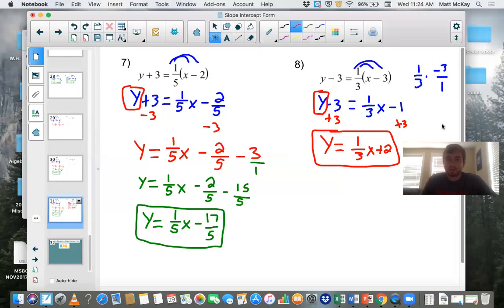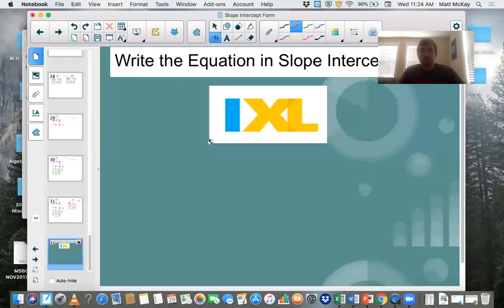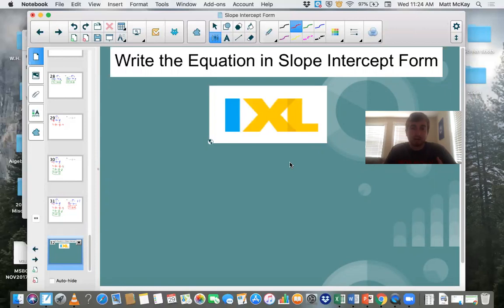Okay, that was a quick review of slope and slope intercept form. There's also a link to IXL problems. Please work on these. You can do 10 of these a day and if you get it incorrect, it will show you step by step how to do it. So that's it for that. Just again, a quick review on slope. Please look through that. Try the problems and complete the IXL problem.